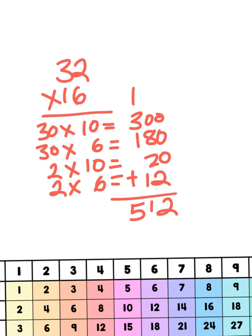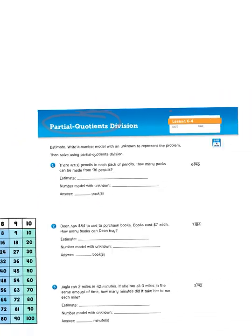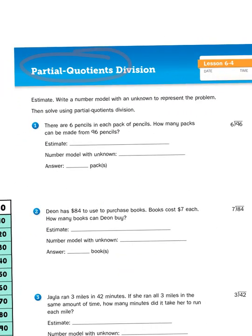So that's what I'm going to do when I think about division. I'm going to use a similar strategy. Let's look at the first problem. It says, there are 6 pencils in each pack of pencils. How many packs can be made from 96 pencils? So what I'm going to do here is I'm going to divide 96 into groups of 6.